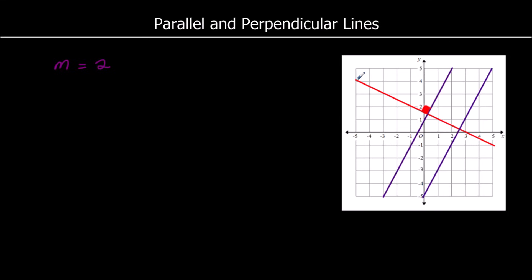The red line goes along two, down one — along two, down one. Which means for every one it goes across, it goes down by a half. So the red line has a gradient of minus a half. If you multiply together the gradients of two perpendicular lines, you will always get negative one. Two times minus a half is negative one.